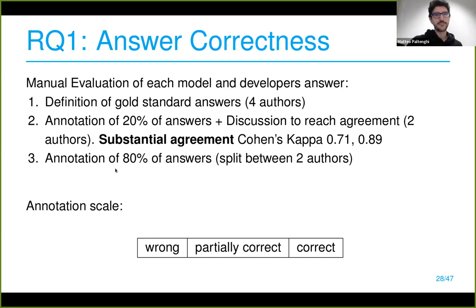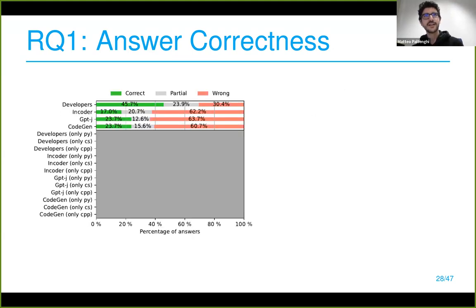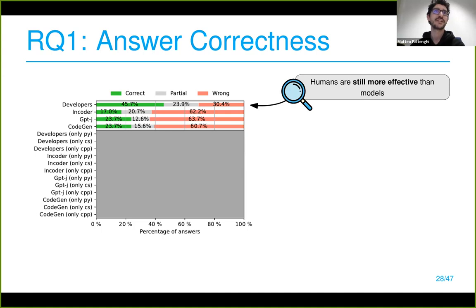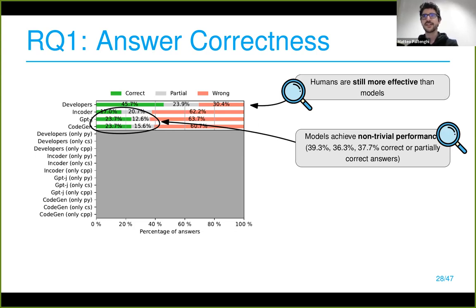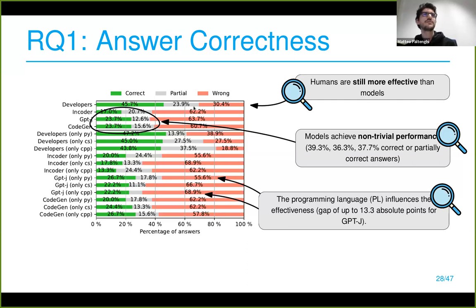The annotation scale was simple: completely wrong, completely correct, or partially correct — matching some points of the expected answer. Looking at the results: developers clearly perform better, which is reassuring. But on the flip side, models are not that bad — they sometimes get correct or partially correct answers to quite challenging questions, achieving around 35 percent correct or partially correct overall.